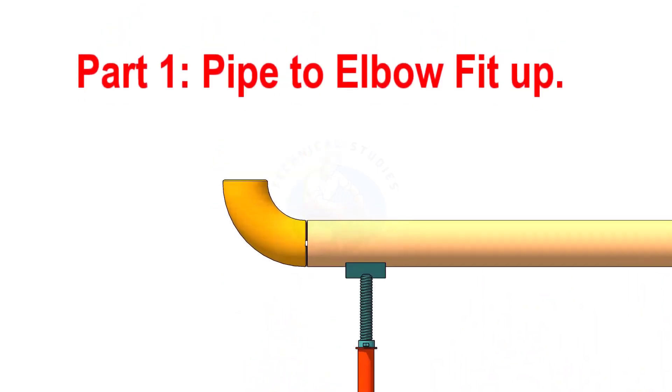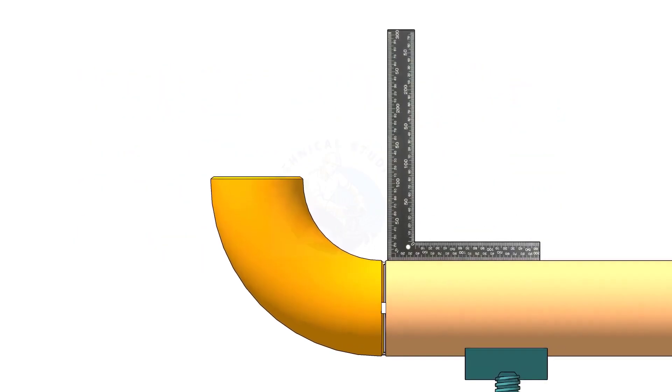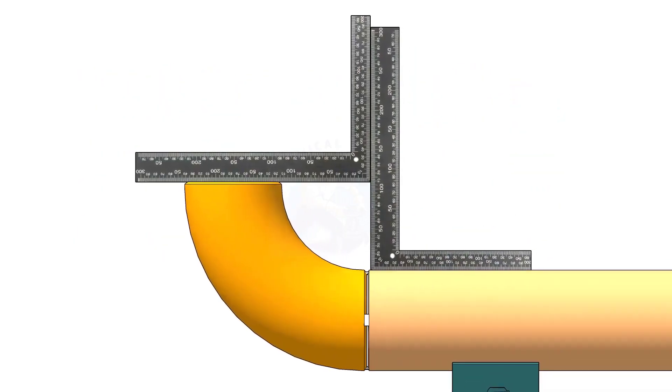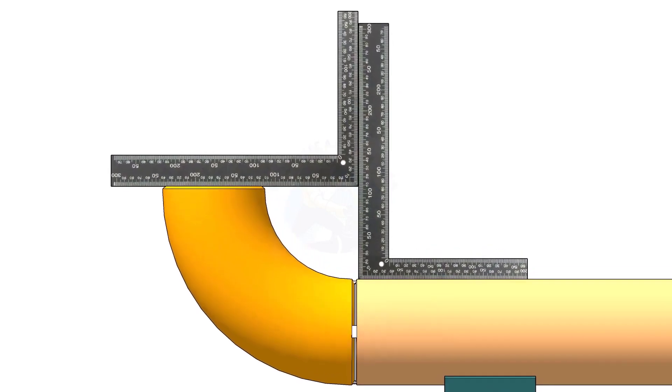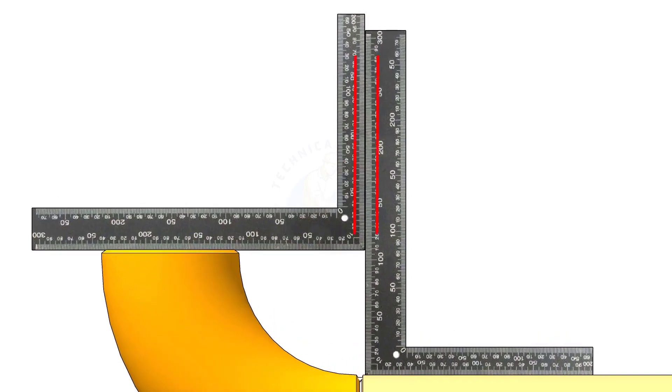There are different methods to check the fit up of an elbow to a pipe. One method is to hold right angles on the pipe and on the elbow and check the gap. If the right angles are parallel, the fit up is correct.